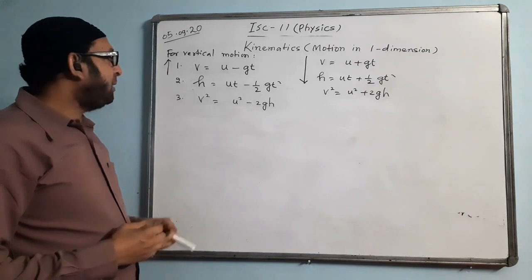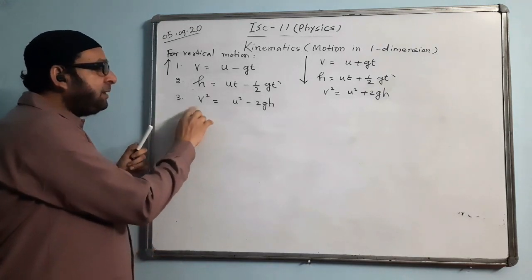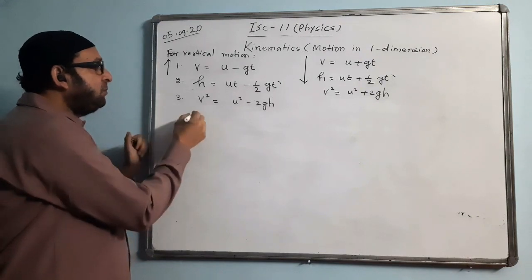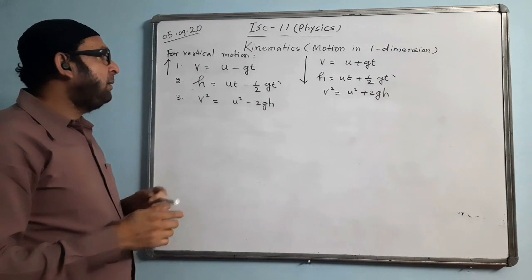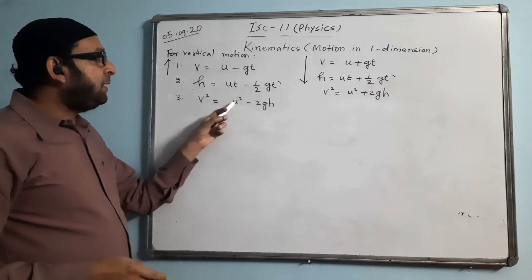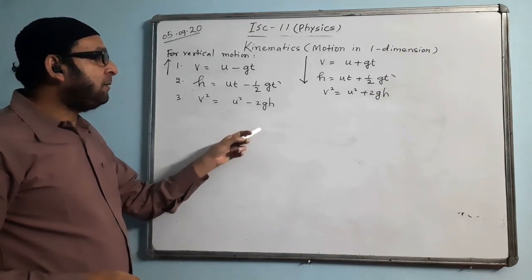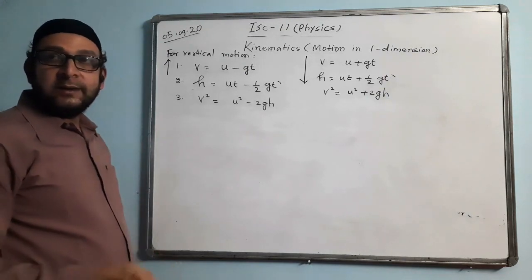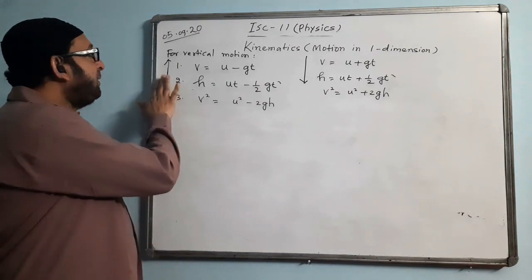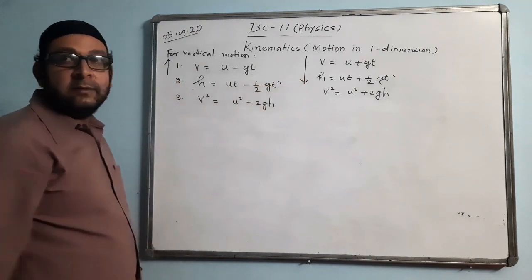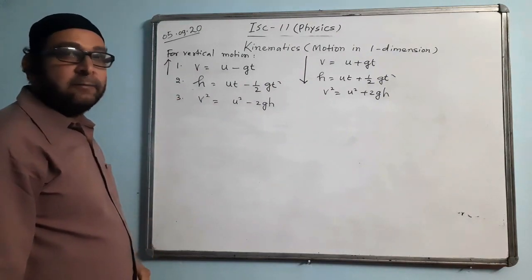Formula 5 can be used for vertical motion. For upward motion, distance moved in the nth second: d_n = u − ½g(2n − 1), replacing a with −g. For downward motion: d_n = u + ½g(2n − 1), replacing a with +g. The rest of the formula stays the same.